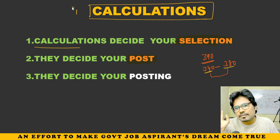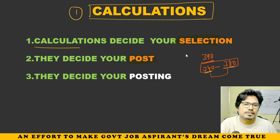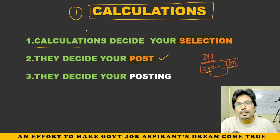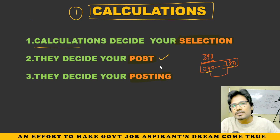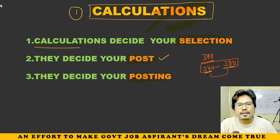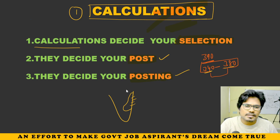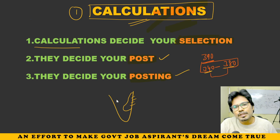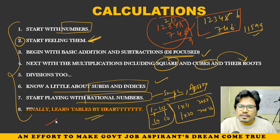The first and foremost part is calculations. Believe me — the difference between 340 and 380 marks in the overall paper — that is nothing but calculations. Only calculations. Are you ready to risk that? No, not at all. Next, about posting: suppose your state is Telangana or AP — if your calculation marks are low, your post could go to Karnataka, Tamil Nadu, Kerala, Odisha, or Maharashtra. Lifelong you may not get a transfer back. Why risk that? Start feeling them and apply.